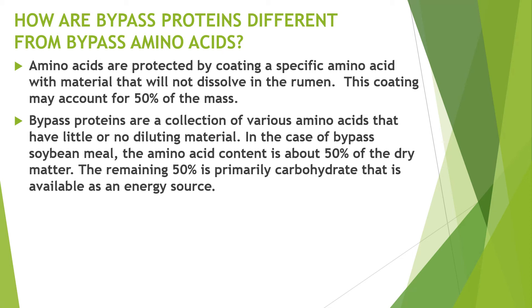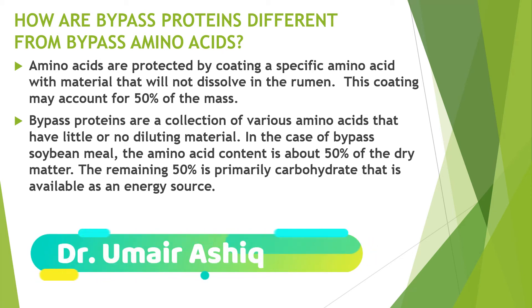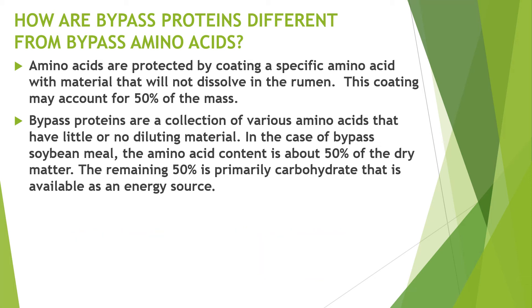How are bypass proteins different from bypass amino acids? Amino acids are protected by coating a specific amino acid with material that will not dissolve in the rumen. This coating may account for 50% of the mass. Bypass proteins are a collection of various amino acids that have little or no diluting material. In the case of bypass soybean meal, the amino acid content is about 50% of the dry matter, with the remaining 50% being primarily carbohydrates available as an energy source.